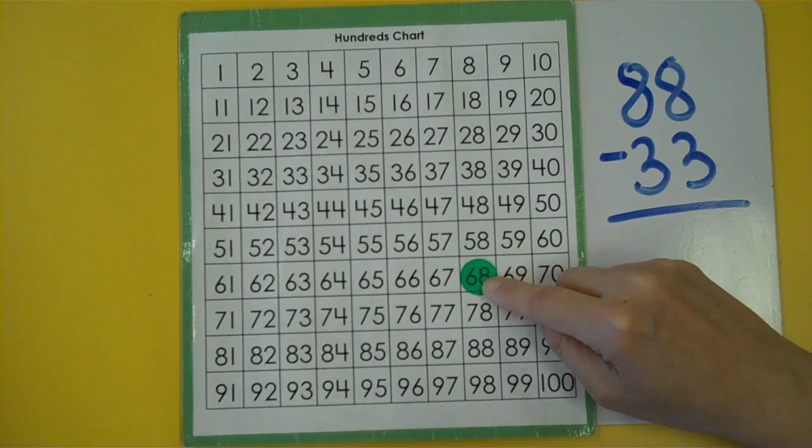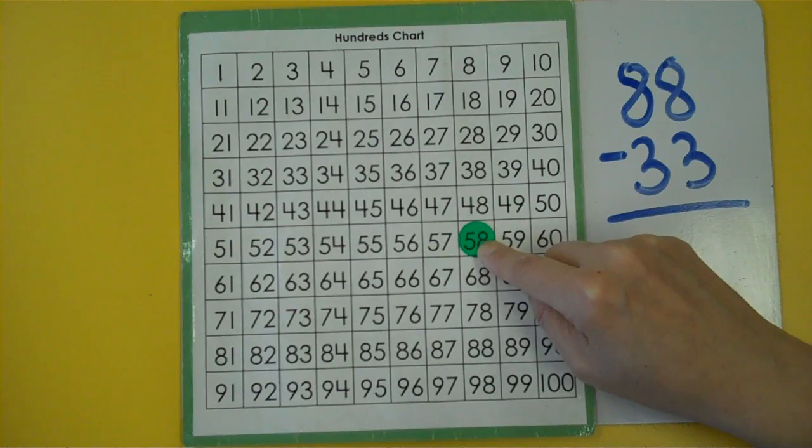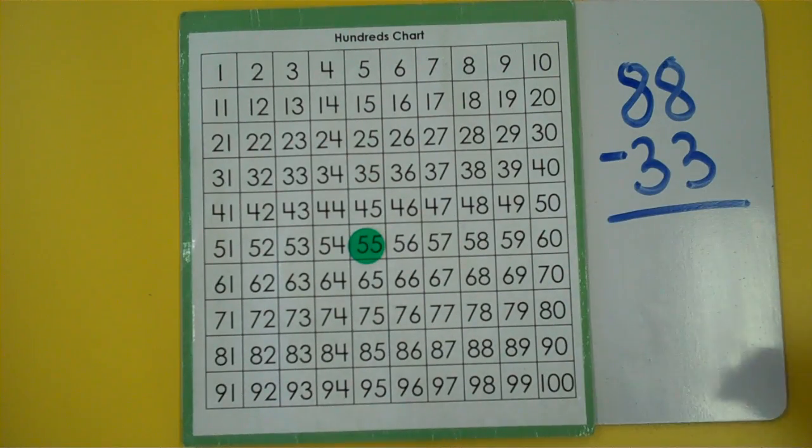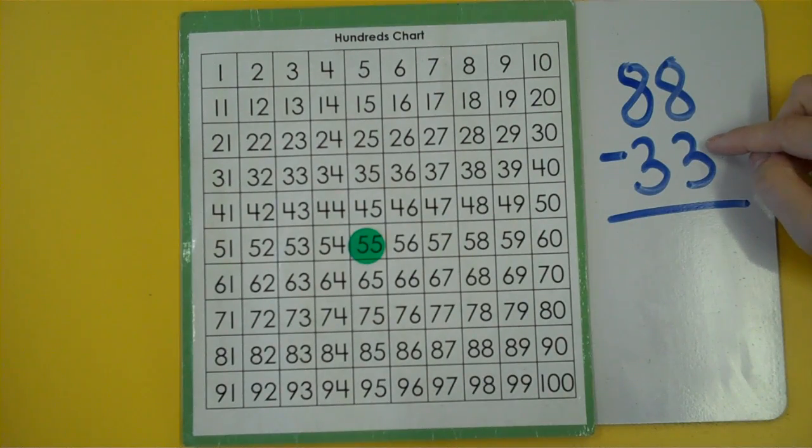10, 20, 30, 31, 32, 33. 88 take away 33 equals 55.